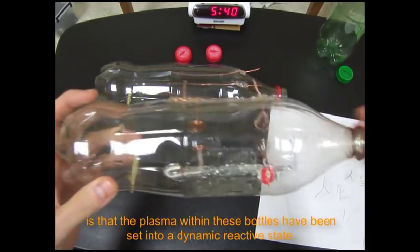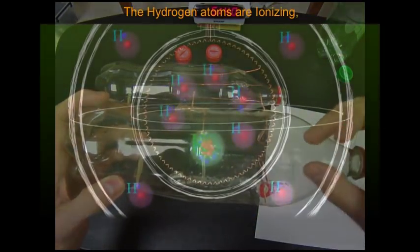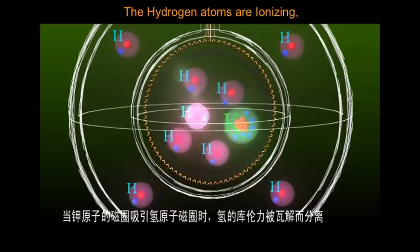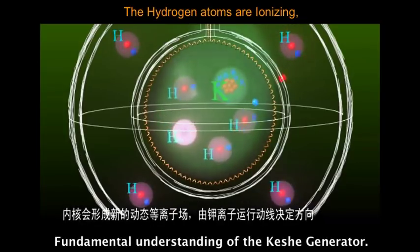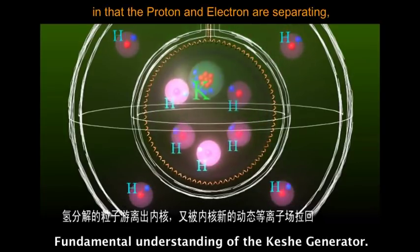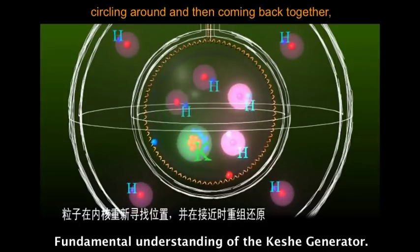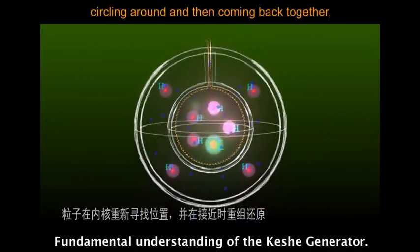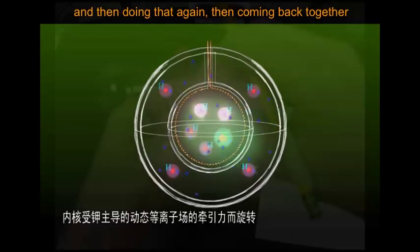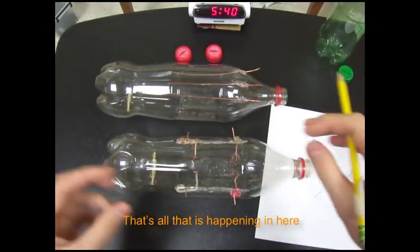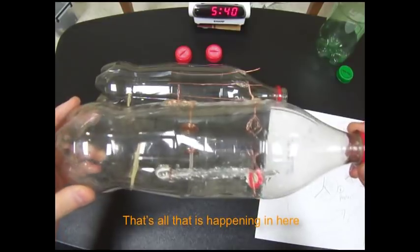The difference between this bottle and these bottles is that the plasma within these bottles has been set into a dynamic reactive state in that the hydrogen atoms are ionizing in that the proton and the electron are separating, circling around and then coming back together, and then doing that again, and then coming back together, and then doing that again. That's all that's happening in here.